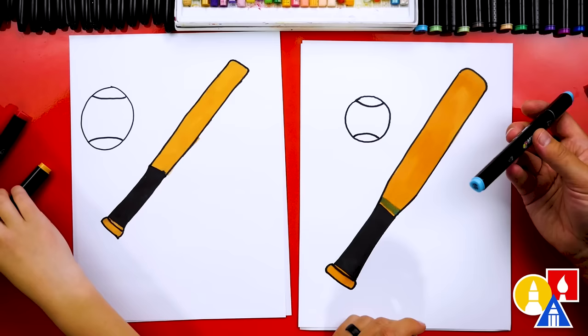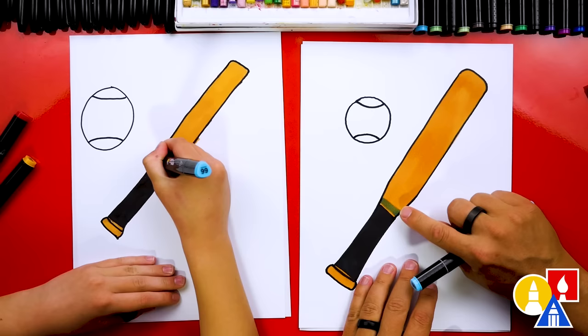I also used 66 blue to add a little stripe right here. And because I colored on top of the orange or the brown, it changed the color. It looks a little more green, which I think is cool too.